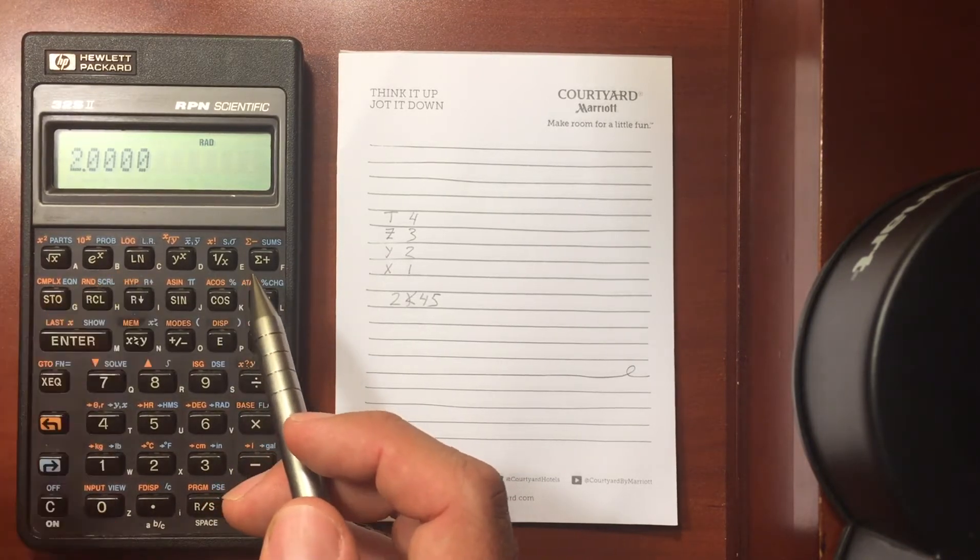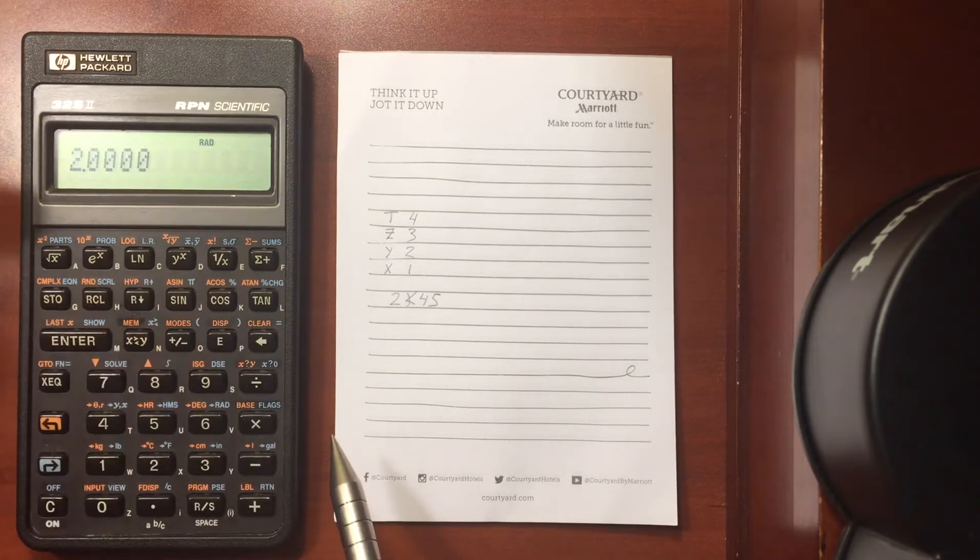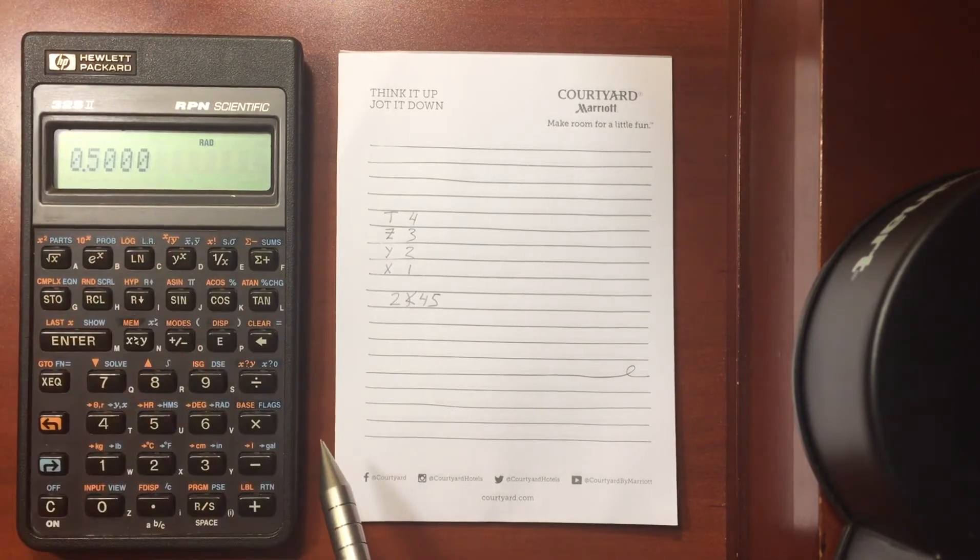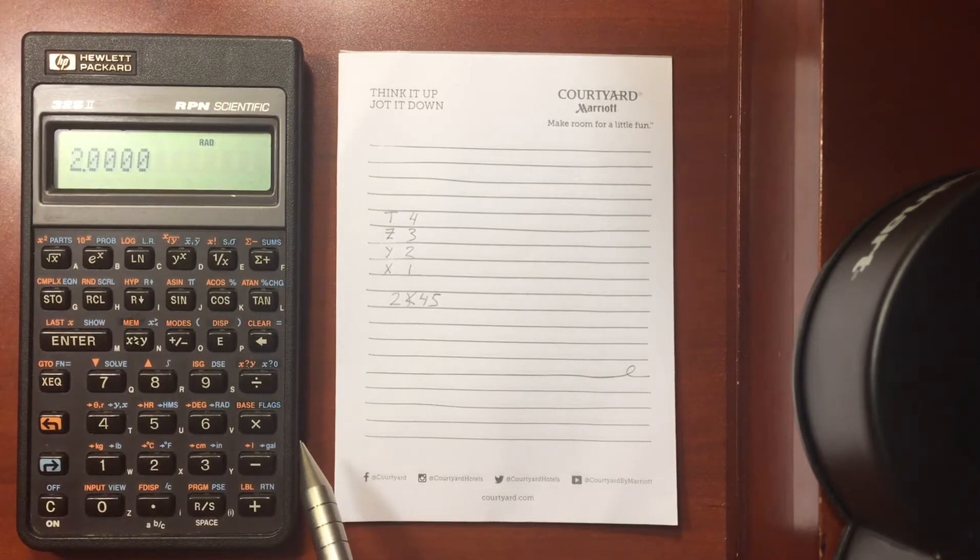So for example, if I roll down here and I do 1 over X, it takes what's in the X register and it does the reciprocal of that, so it gives me 0.5. I take the reciprocal again.